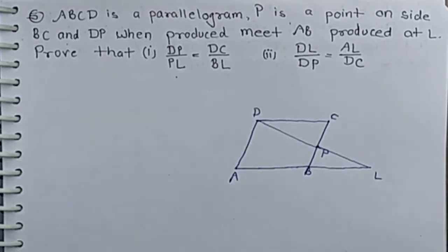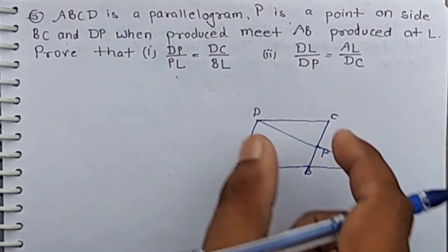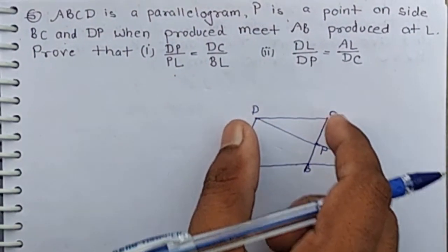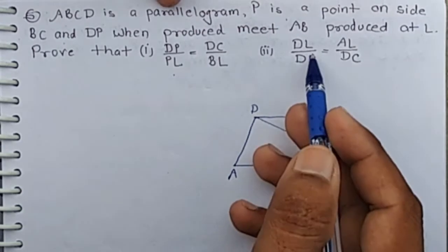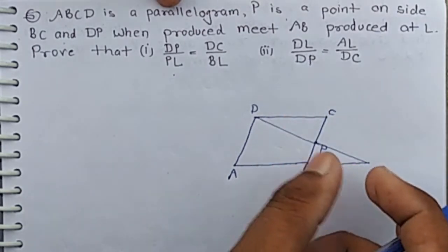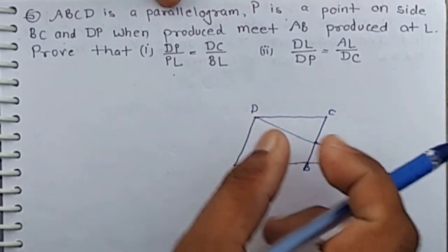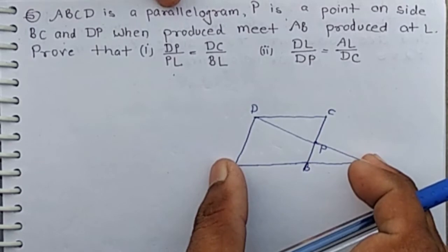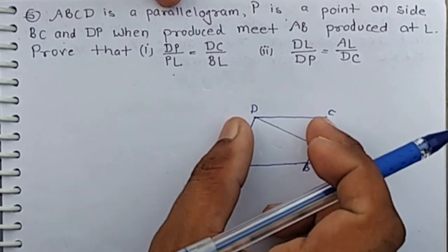We have to prove that DP by PL equal DC by BL — first part — and DL by DP equal AL by DC — second part.